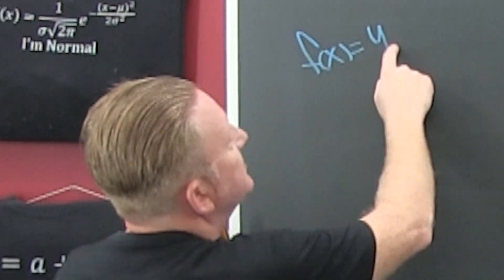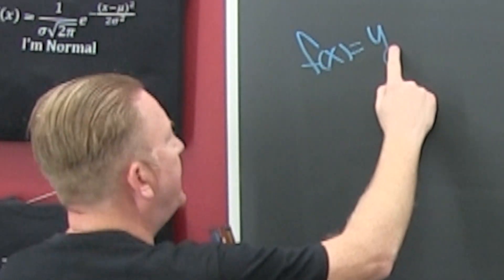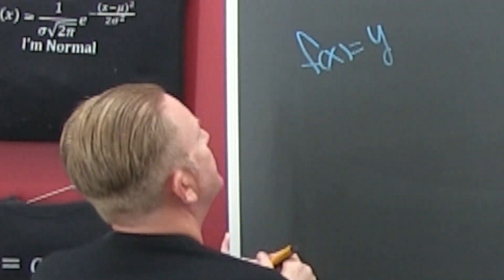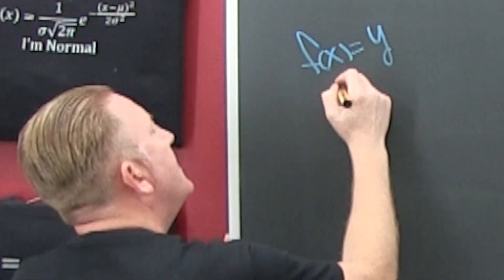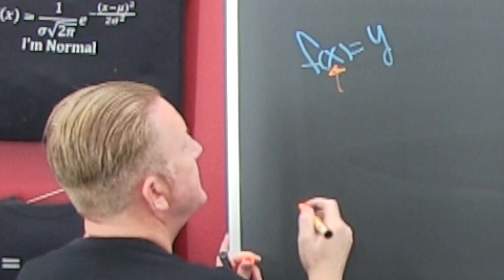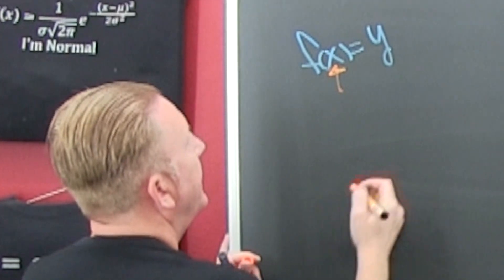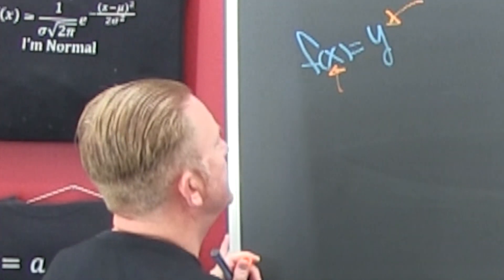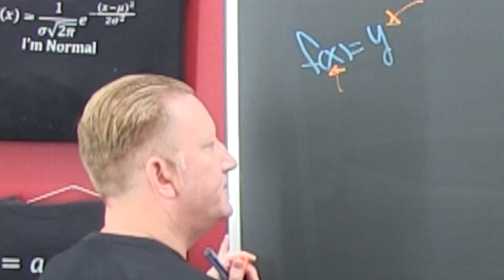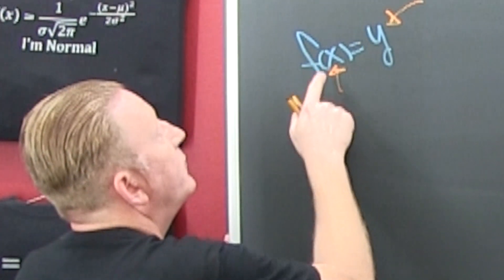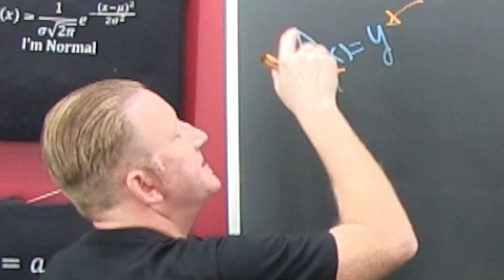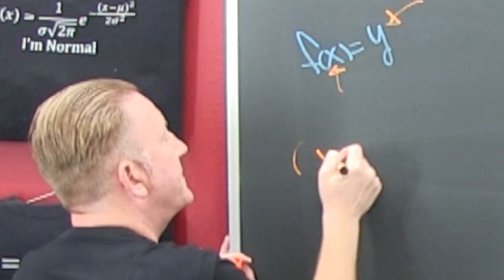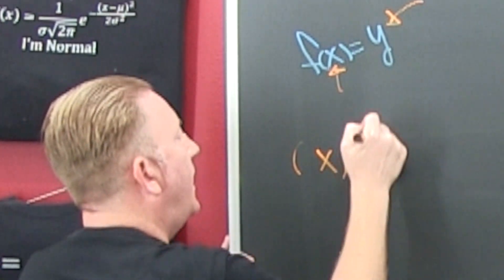f of x is the function formerly known as y. The x is on the inside, and the y is on the outside. So if we're looking at this, then we need to see the ordered pairs — x comma y.